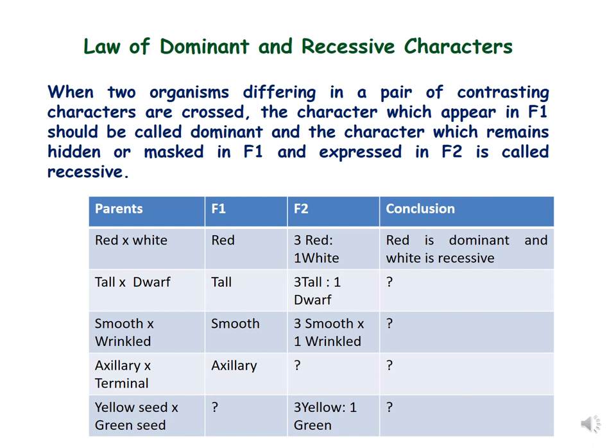For example, in this table, the first set of parents is red and white flowered plants. When we cross these two plants and in F1 generation we get only red flowered plants, we conclude that red is dominant. After selfing of F1 plants, if in F2 we get red and white flowered plants in a ratio of 3 to 1, we say that white is recessive to red because it was hidden in F1 and expressed in F2. So red is dominant and white is recessive.